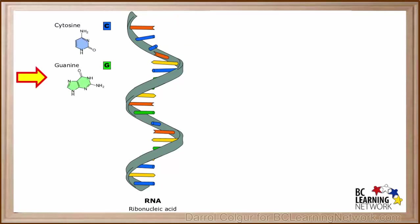These are cytosine, guanine, and adenine. Do you remember what the fourth base in DNA is? It is thymine. However, RNA does not have thymine. Instead, it has a base called uracil, abbreviated as a U.